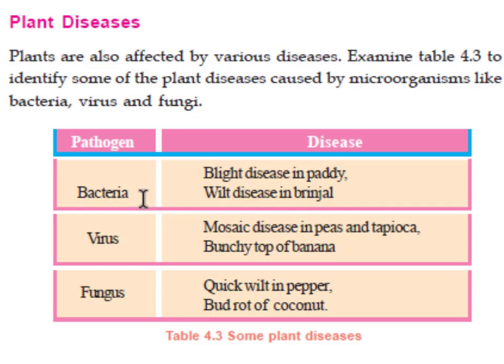The next pathogen is virus. Mosaic disease in peas and tapioca is caused by a virus. Bunchy top of banana is also a viral disease. Symptoms of mosaic disease include small spots, mosaic patterns, and a network-like appearance on leaves.